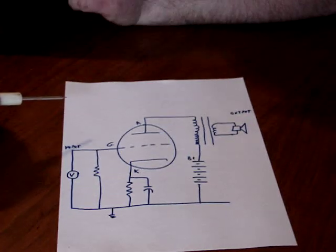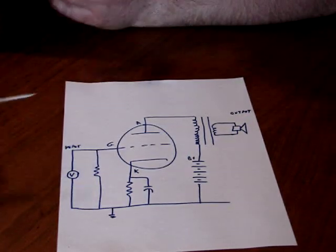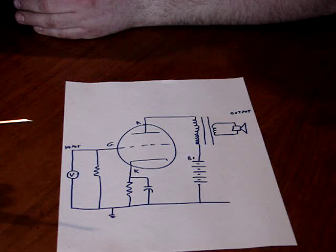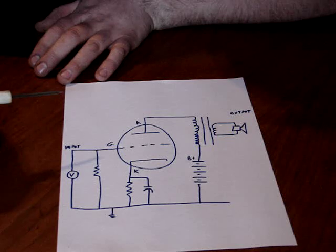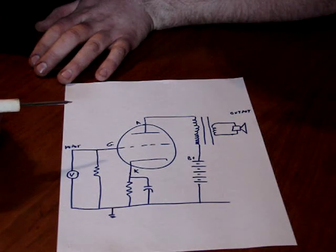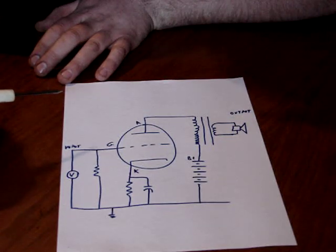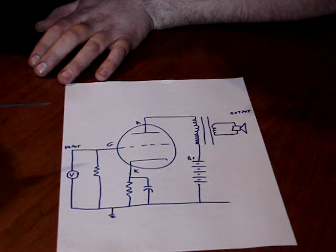Well, what does bias do? I mean, why would you want to change the bias? Isn't there just one bias that works for everything? Well, yes and no. There are many classes of tube amplifiers. You have class A, you have class AB, you have class B, and you have class C.